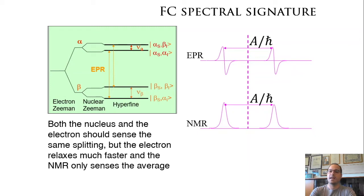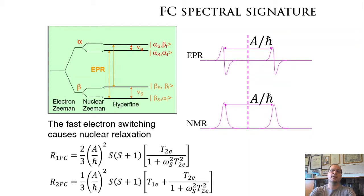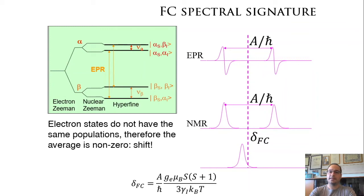This fast switching causes relaxation. You have to keep in mind that the population of the electron alpha and beta states are not equal in high field, and therefore you get an average which is non-zero, which corresponds to a shift in the NMR spectrum. This shift is called the Fermi contact shift.